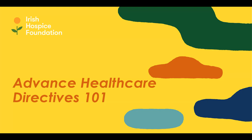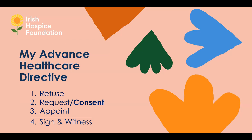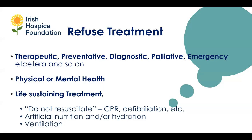Within an Advanced Healthcare Directive you can do three different things: you can refuse treatments, you can request treatments — or consent to treatments, which is helpful terminology from the codes of practice — and you can appoint or nominate someone to speak and act on your behalf for medical decisions. You sign it, it's witnessed, and it's a legally valid document.